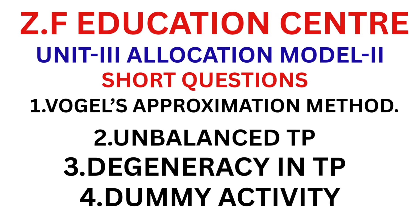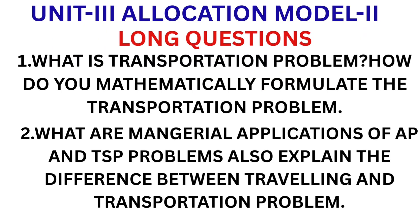Unit 3 short questions: Vogel's approximation method — dead sure question. What are the steps involved in Vogel's approximation method will also come in long questions. Unbalanced TP, degeneracy in TP, and dummy activity — 4 important short questions in Unit 3.